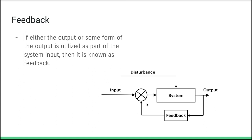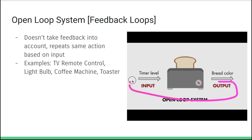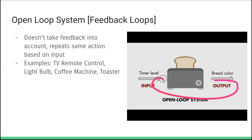There are different types of feedback loops. The first is an open loop system, which means there's no feedback at all. With a toaster, for example, we put in a timer level for how long we want to toast, and then we toast the bread. Our output is basically the bread color, and we don't take any further automatic action based on that color. We're not sending the results of the toasting back to the toaster to take further action. This is an open loop system.